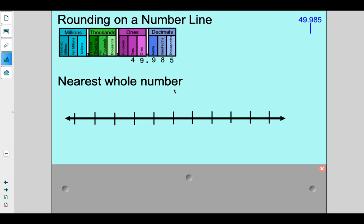I have to think about if I were counting by ones, like 40, 41, 42, 43, 44, 45, 46, 47, 48, 49, 50, which two ones 49 and 985 thousandths would fall between?